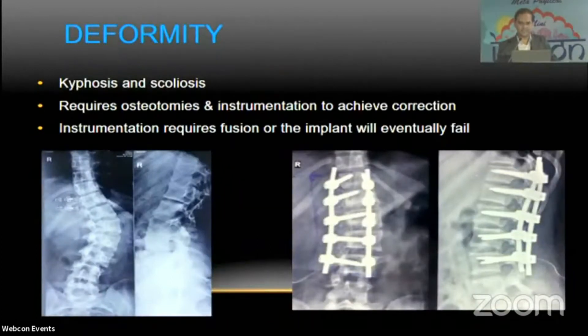In spinal deformity — kyphosis and scoliosis — osteotomies and instrumentation are required to achieve correction. Whenever instrumentation is done, it requires fusion; otherwise the implant will eventually fail.